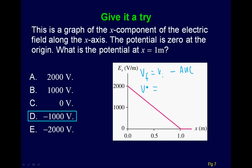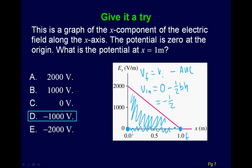V final is the potential at one meter. V initial is zero, starting at the origin. It's really important to identify your final and initial positions. We need the area under the curve between those two points. This is a triangle, so it's one half base times height: one half times one meter times 2,000 volts per meter, giving negative 1,000 volts. That's how you find the potential at another point when given this graph. Here they write E_S — in this case it's the X component of the electric field.